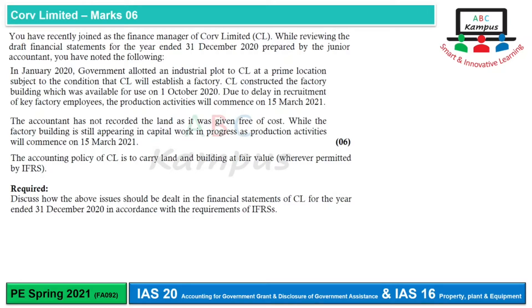In January 2020, the government allotted an industrial plot to CL at a prime location, subject to the condition that CL will establish a factory. CL constructed the factory building, which was available for use on 1st October 2020. Due to delay in recruitment of key factory employees, production activities will commence on 15 March 2021. The accountant has not recorded the land as it was given free of cost — this is incorrect treatment.